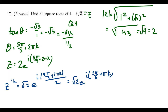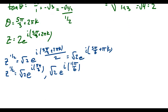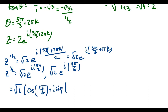There are two options: k equals zero and k equals one. So the square roots of z are the square root of two times e to the i five pi over six, and then root two times e to the i eleven pi over six — adding pi to five pi over six gives eleven pi over six. Now we need to compute these complex numbers using these angles.